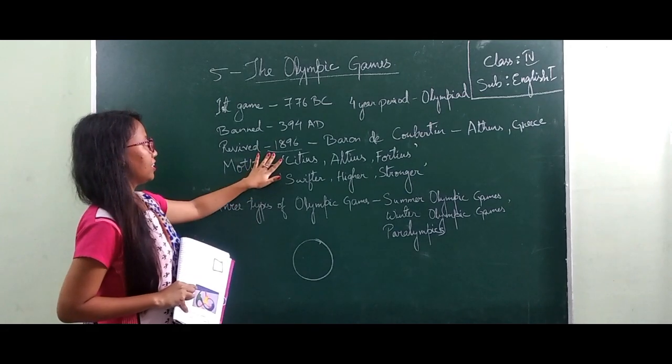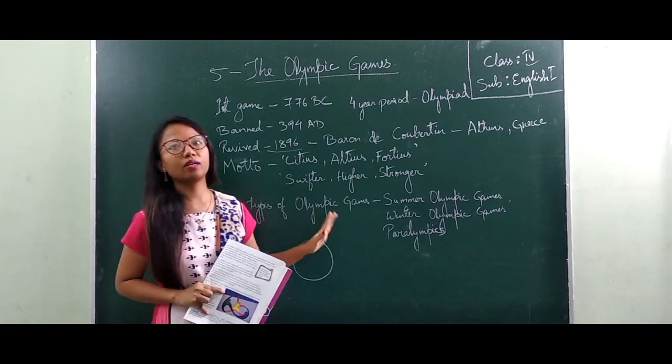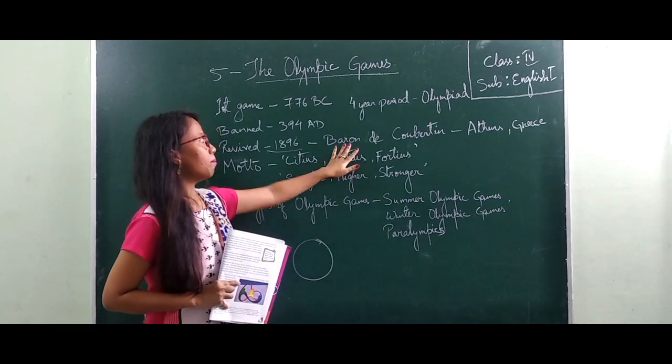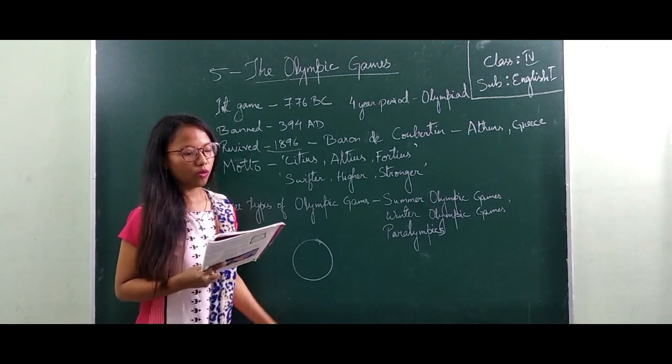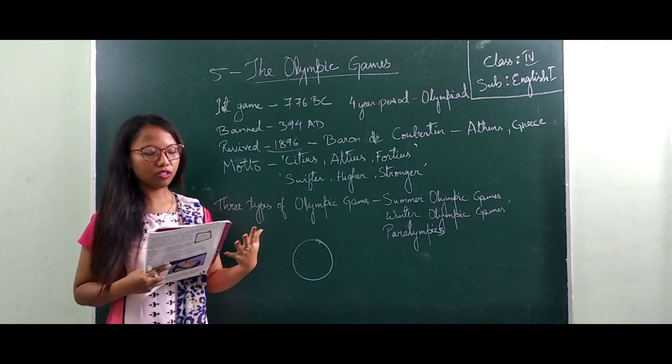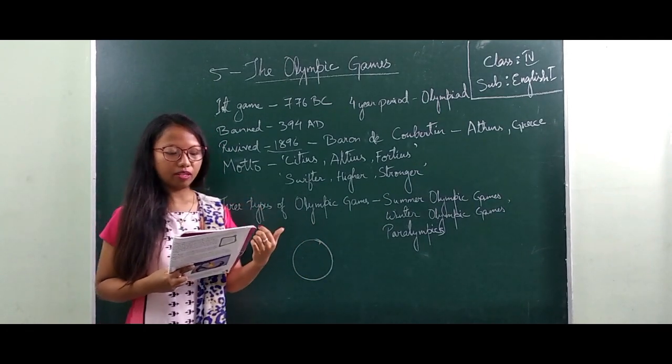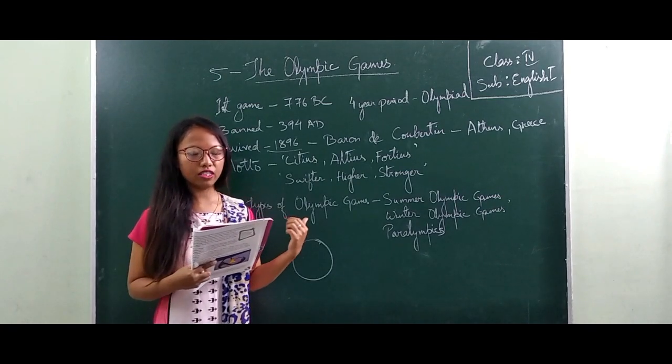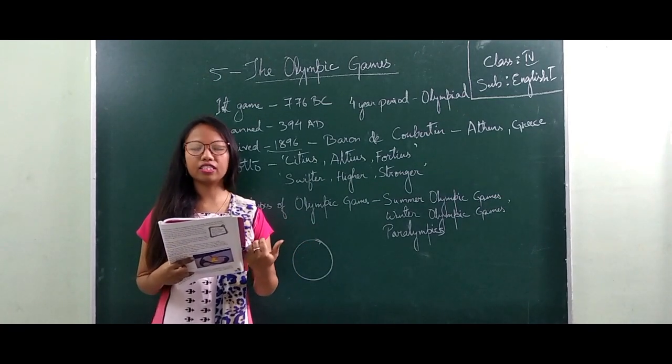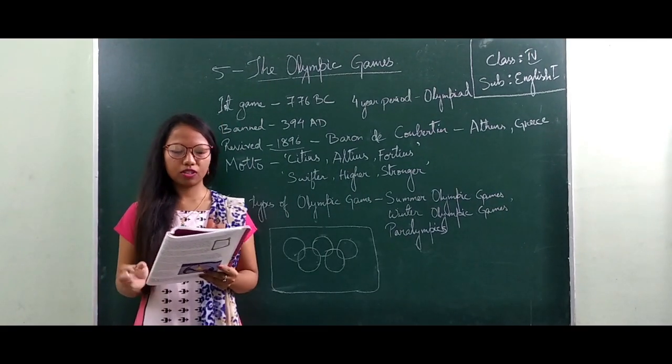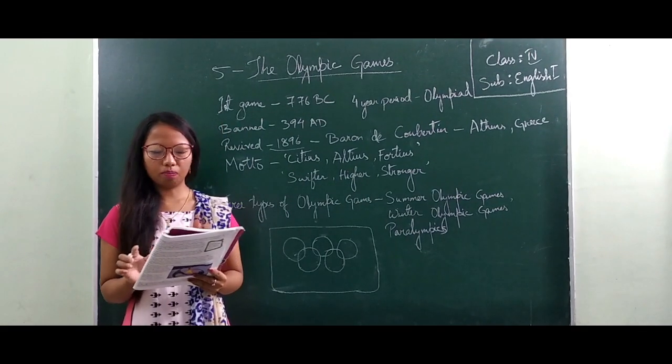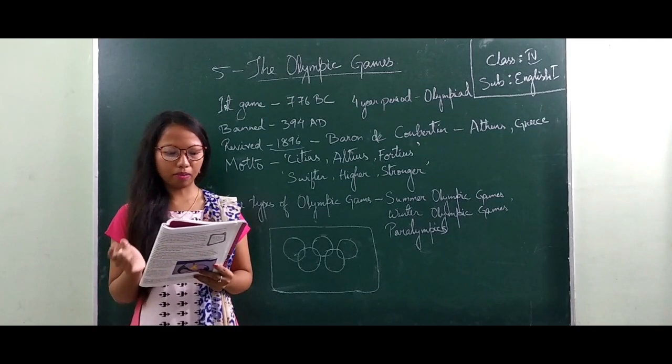After that, in the year 1896, the Olympic Games was revived again by Baron de Coubertin and it was first held in Greece. Baron de Coubertin became the founder of the International Olympic Committee and he designed the flag of the Olympics. The Olympic flag was used in the 1920 Olympic Games in Belgium.